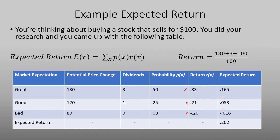So in this problem, we're going to calculate the first step in figuring out how to find the standard deviation. And that is by finding the expected return. So the problem is, is you're thinking about buying a stock that sells for $100. You did your research and you came up with the following table.